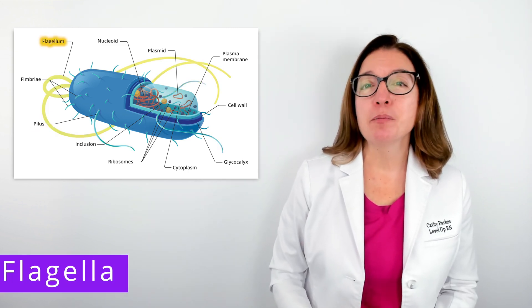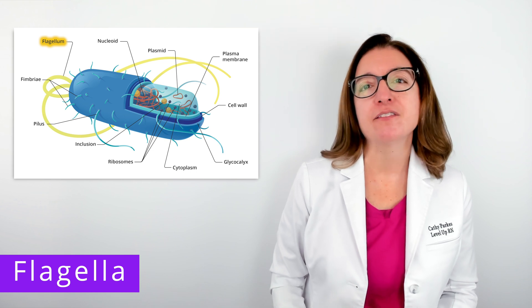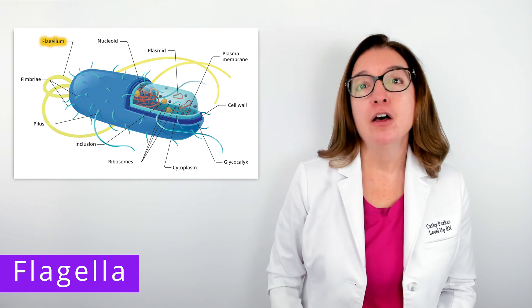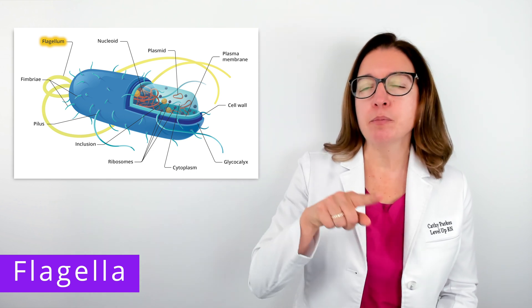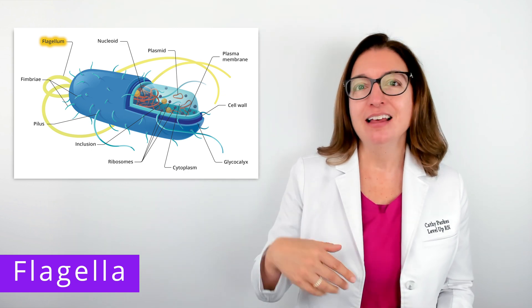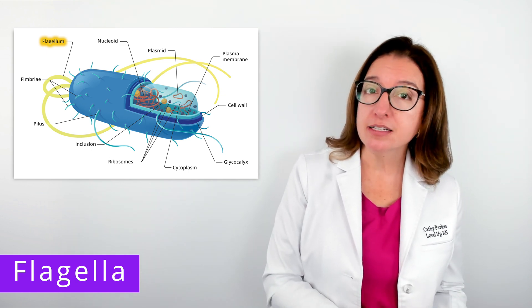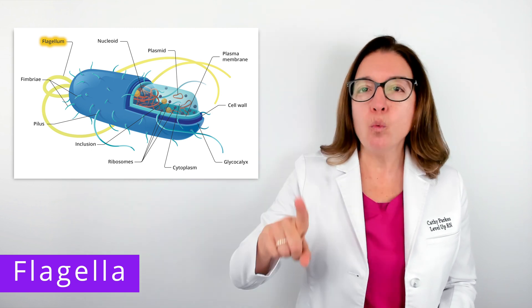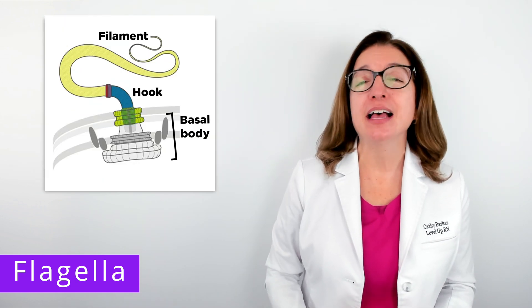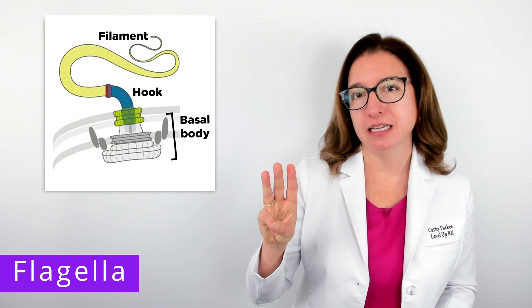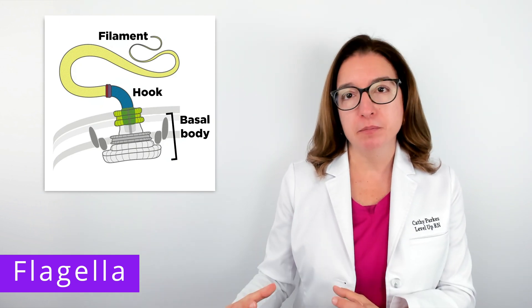Now we're going to talk about flagella, which are structures that allow for motility of the cell. Flagella in prokaryotic cells rotate in a propeller-like fashion. This is different than flagella in eukaryotic cells, which move in a whip-like fashion. A flagellum has three main structural elements, including the basal body, the hook, and the filament.